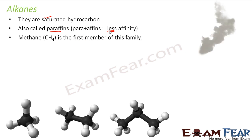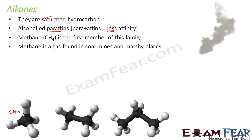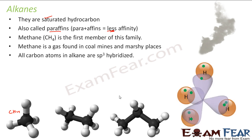Methane is the first member of this family. Its formula is CH4. It is found in gas form — in coal mines or marshy places. All carbon atoms in methane are sp3 hybridized. This is the structure of methane: this is my carbon, and these are my four sp3 orbitals, with each hydrogen attached.